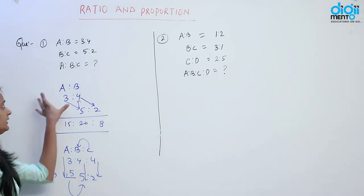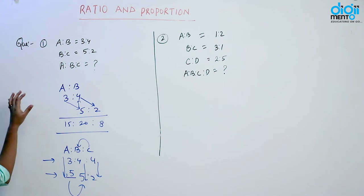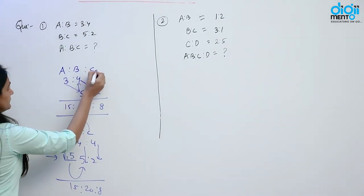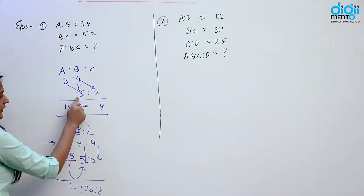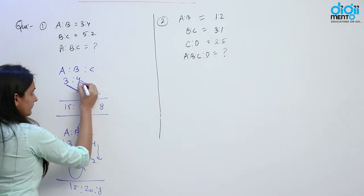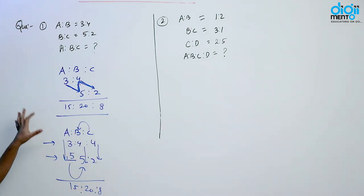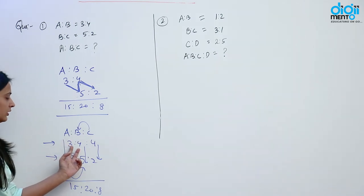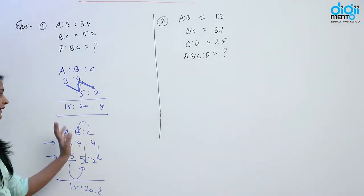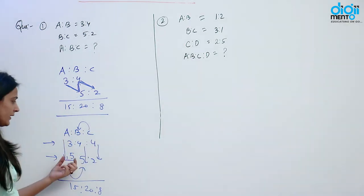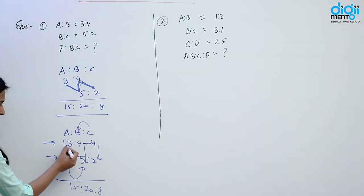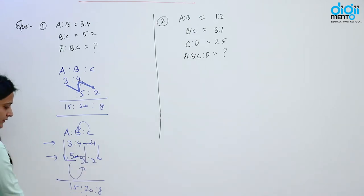Hamein question mein A ratio B diya hua hai aur B ratio C diya hua hai. Hamein find out karna hai A ratio B ratio C. Is 5 ko multiply kiya 4 se toh hamein kya mil gaya 20 — is 2 ko multiply kiya 4 se toh hamein kya mil gaya 8. Yeh jo hai ek reverse N ban raha hai aur jo sabse easy method hai ratio ko solve karne ke liye — aap kya karo A aur B ka jo ratio given hai usko as it is likh do. Second row mein likhenge ratio jo B aur C ka given hai. First row ke C ka blank space fill karne ke liye jo C ke side mein digit hai usko C ke neeche likh denge, aur aise hi second row mein A ka blank fill karne ke liye jo side se digit hai usko as it is, aur vertically multiply kar denge: 3 into 5 that is 15, 4 into 5 that is 20, and 4 into 2 that is 8. This is the ratio of A, B, C.